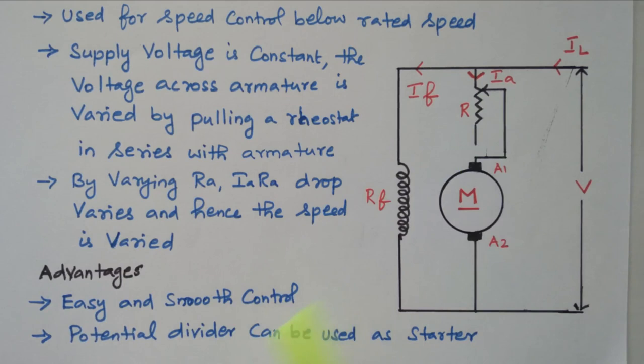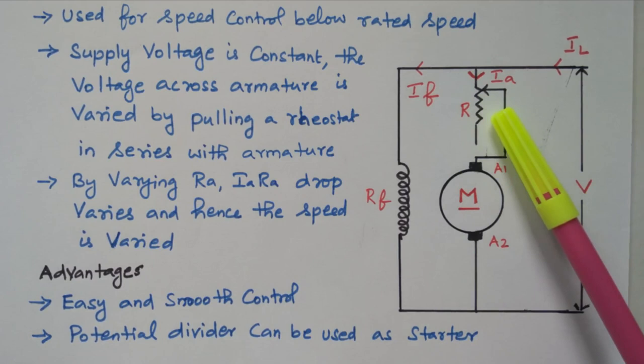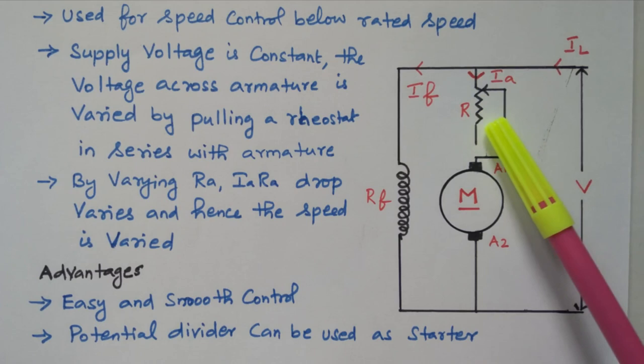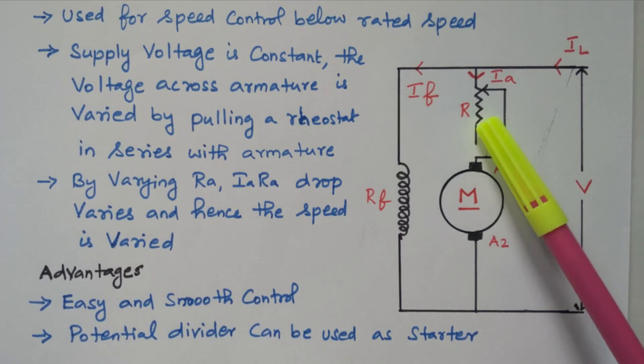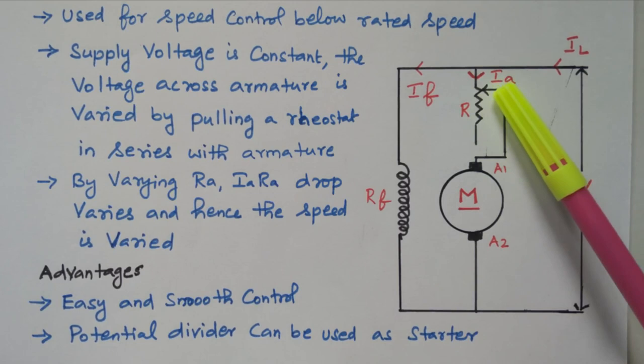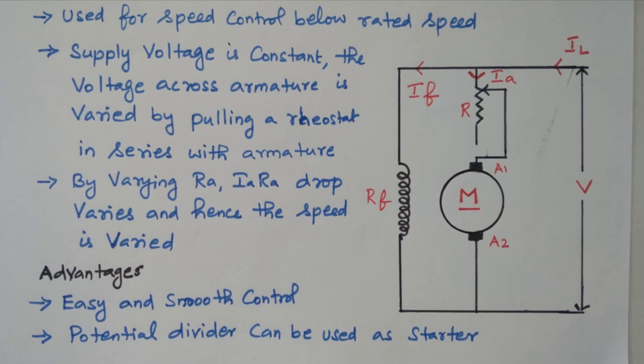Advantage: easy and smooth control. This potential divider can also be used as a starter. Initially we can put maximum resistance so that current will be minimum. By slowly reducing the resistance we can increase the current flowing through the armature, so it acts as a starter — gradually increasing the current as the motor starts up.